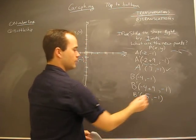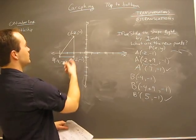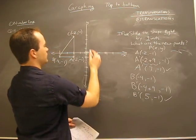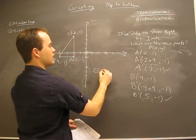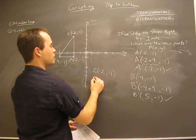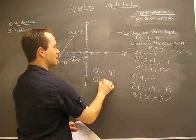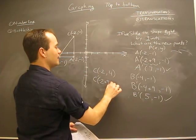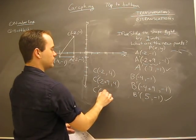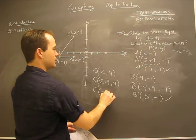And then C, the last one, negative two, four. I'll just do that up here. If C is negative two and four, then C prime is negative two plus nine, four. Therefore C prime is seven and four.